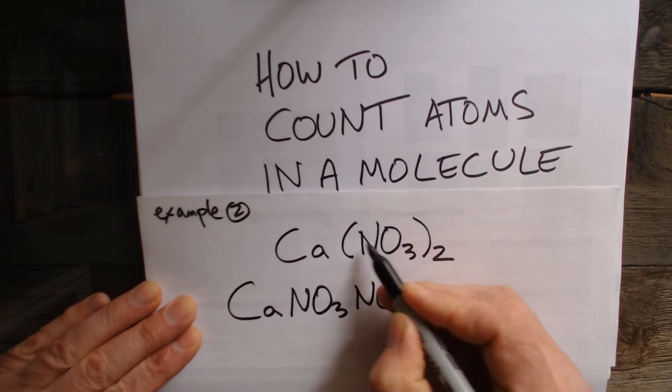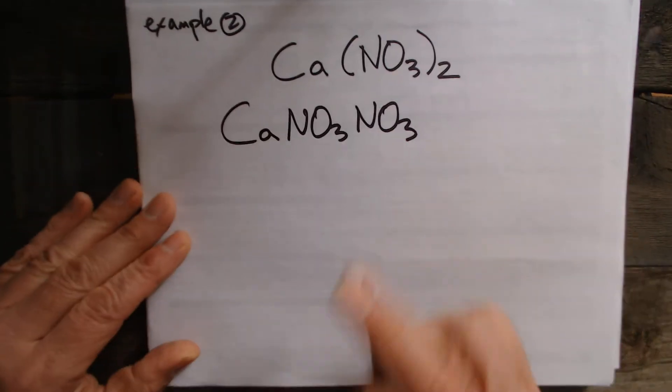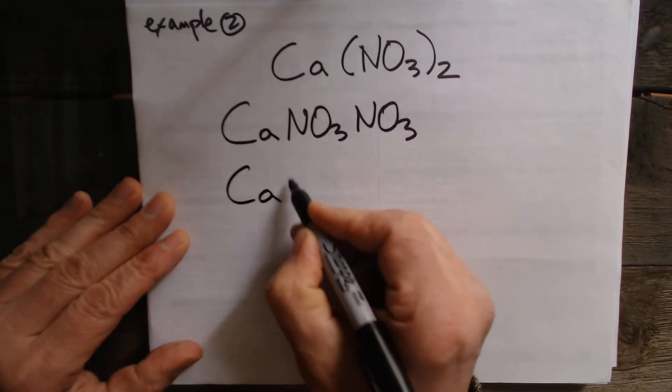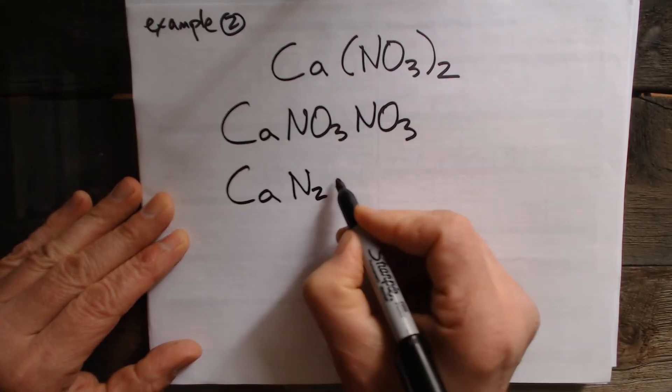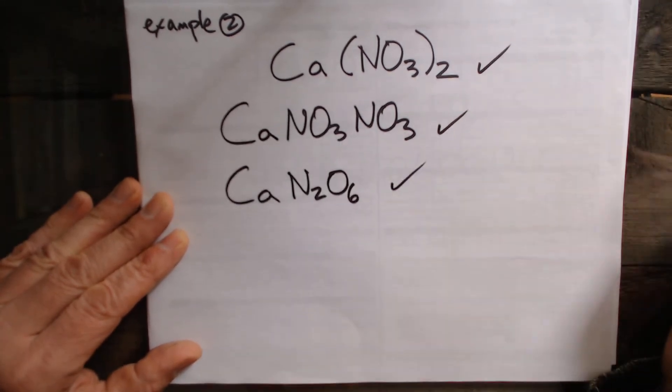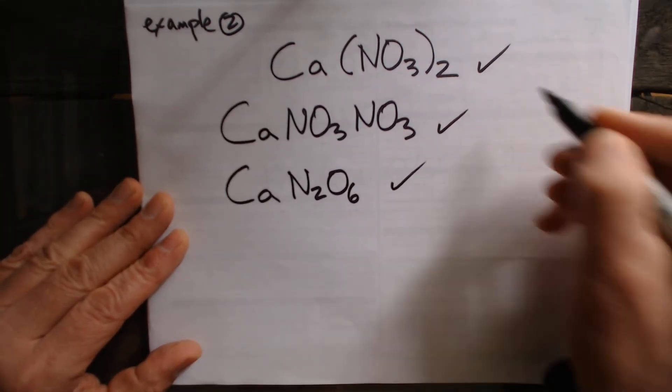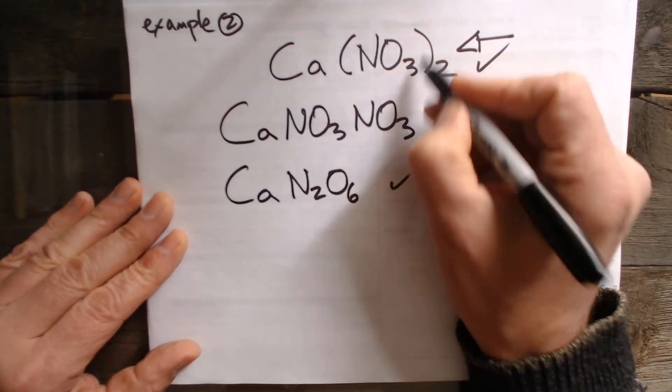This is saying there's two NO3s and you might even have just gone, well why couldn't I have just gone Ca N2 and 3 plus 3 is 6. Why couldn't I have written that? And all three of them are actually correct. But as you'll find out this tells you something about the shape of the molecule later on.